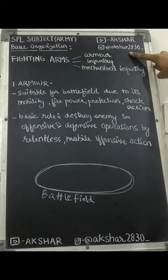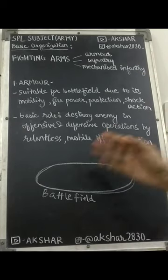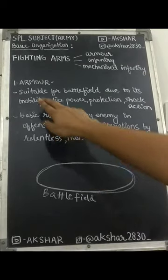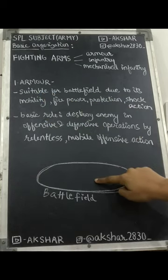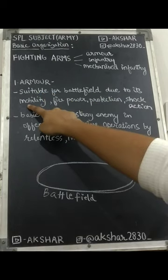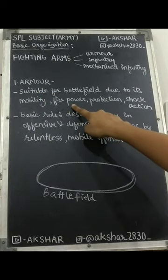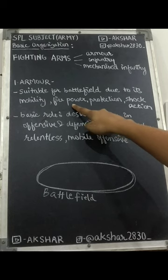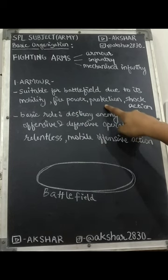In fighting arms, we have three: armor, infantry, and mechanized infantry. First, we'll do armor. Armor is suitable for the battlefield due to its mobility — that means movement — firepower — that means the weapons and ammunition — protection, which means it protects its own forces by defending, and shock action by attacking the enemy.